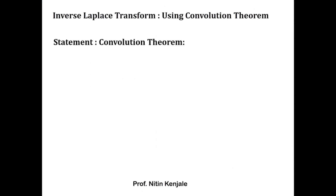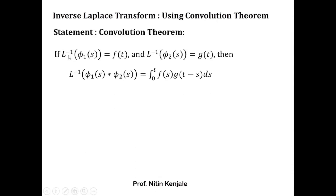This theorem states that if the inverse Laplace transform of φ1(s) is f(t) and the inverse Laplace transform of φ2(s) is g(t), then the inverse Laplace transform of the convolution φ1(s)·φ2(s) is given by the integral of f(s)·g(t−s) ds over the limit 0 to t, where f(s) is computed from f(t) and g(t−s) is computed from g(t).